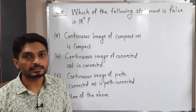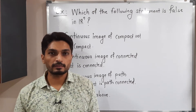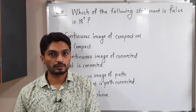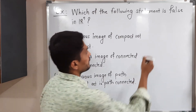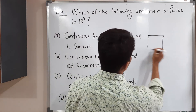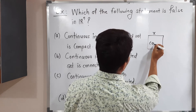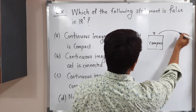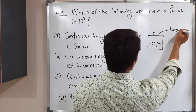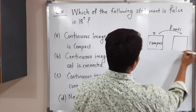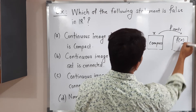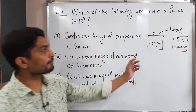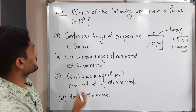So, continuous image of compact set is compact. This concept we have already seen in a previous semester. If X is a compact metric space and we have a function F which is continuous, then its image F(X) is compact. So image of compact set is compact — this is correct.